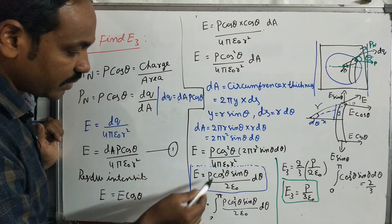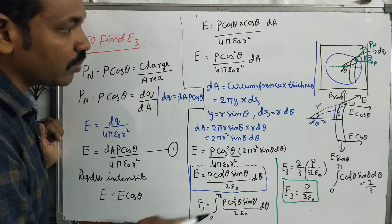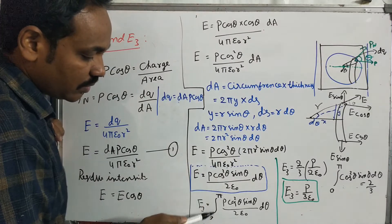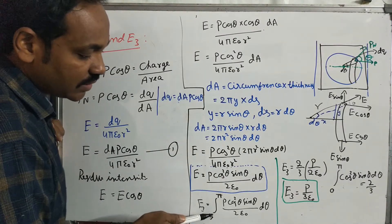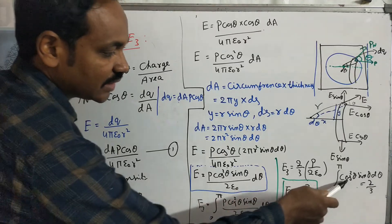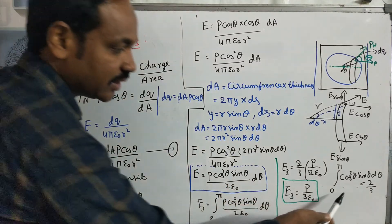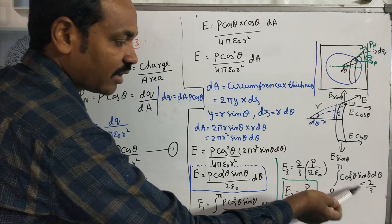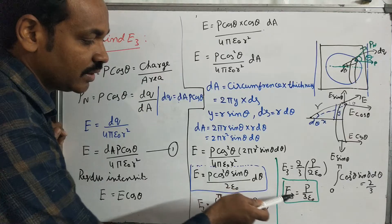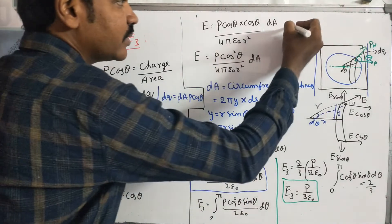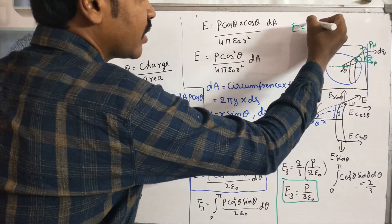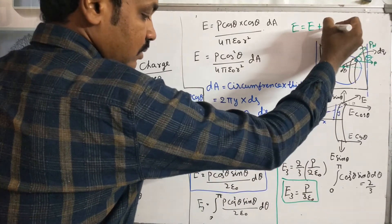Integrating from 0 to pi, the 4 pi cancels to give 2 epsilon naught. Using the integral of cos theta sin theta d theta from 0 to pi, we get 2 by 3. So E3 equals P by 3 epsilon naught. Therefore, E_internal equals E1 plus E2 plus E3, where E3 equals P divided by 3 epsilon naught.